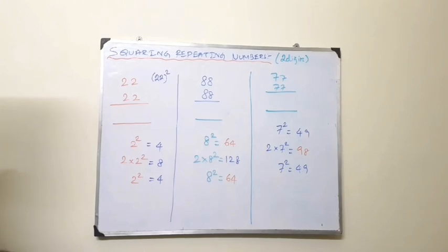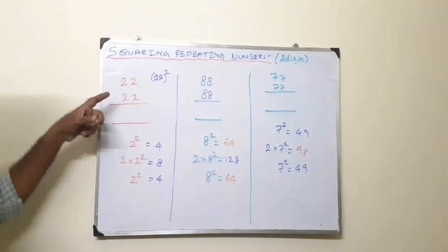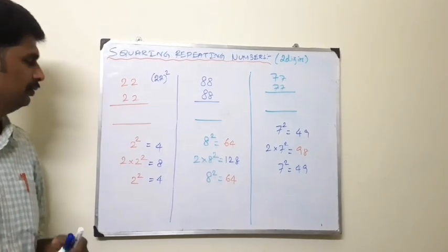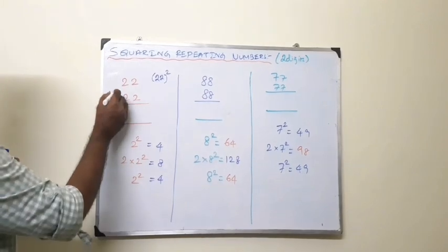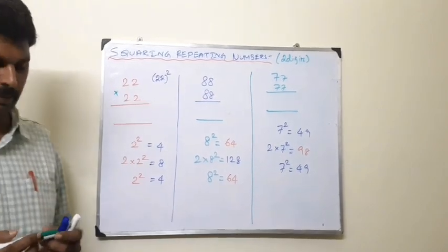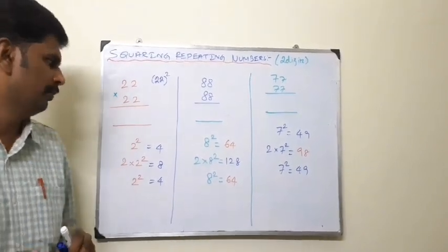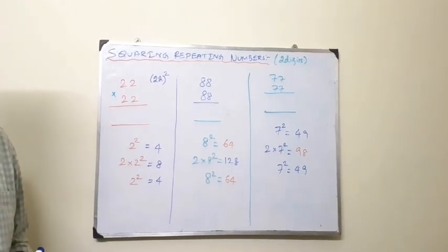First example, let me take the first example, 22 into 22. This is how to multiply using Vedic Mathematics. Let's look at that. In this session we will follow 3 rules.